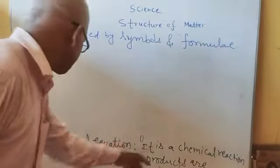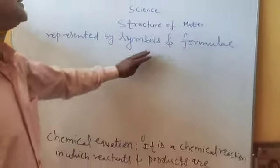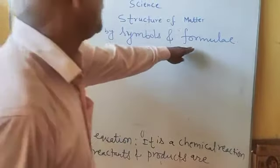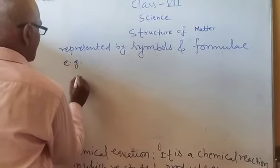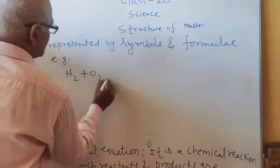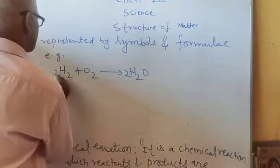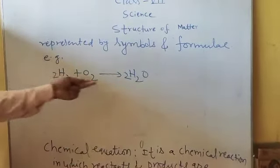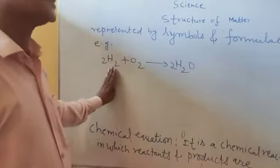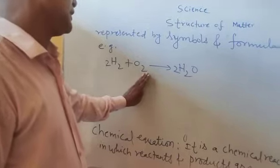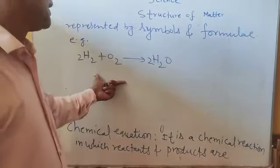symbols and formulae. For example, 2H2 plus O2 forms 2H2O. This is a balanced equation. Now, what is balanced equation? If the number of atoms of every element in reactants and products are same, then it is called balanced equation.